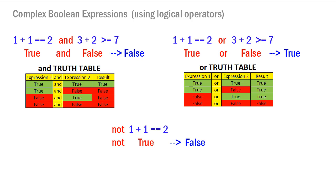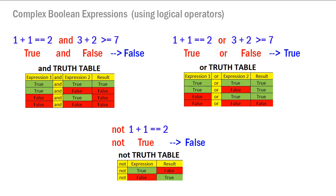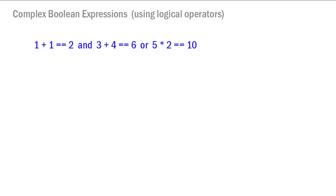The 'not' operator reverses the truthfulness of a boolean value. For example, 'not (1 plus 1 is equal to 2)' becomes 'not true', which is false. So 'not' changes a true to a false or a false to a true. The truth table simply shows a reversal of the expression.